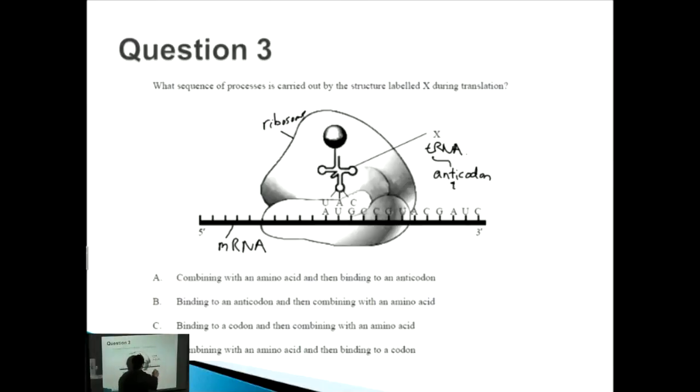Let's look at the answers. A: combining with an amino acid and then binding to an anticodon - well it doesn't bind to an anticodon, the tRNA binds to the codon on the mRNA. B: binding to an anticodon and then combining with an amino acid - once again, not binding to an anticodon. C: binding to a codon and then combining with an amino acid - that seems more correct, but this is the wrong order.